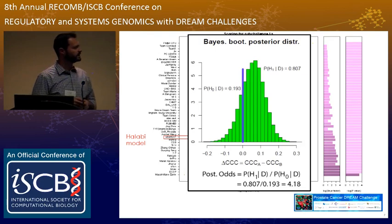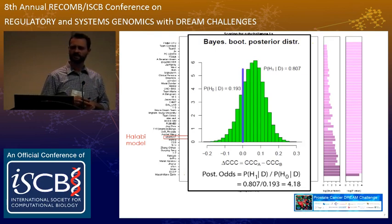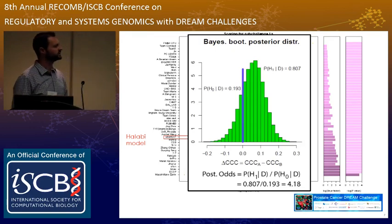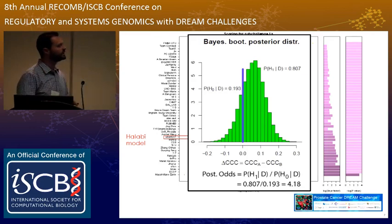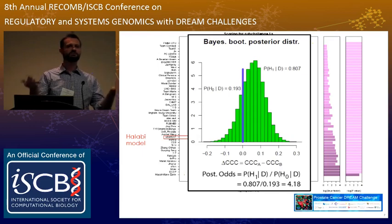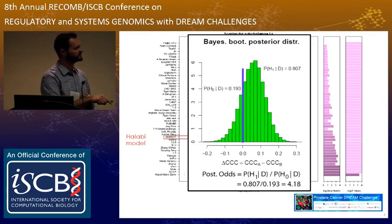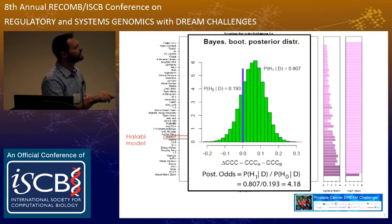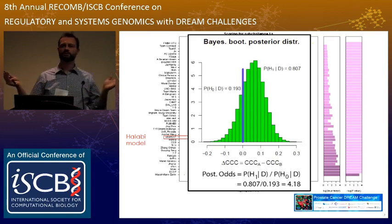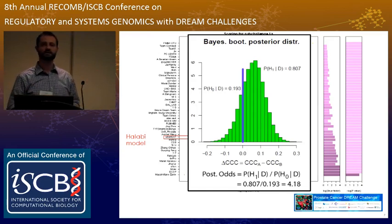When doing bootstrapping to determine if one team is actually better than another, we bootstrap the data, score teams, and compare the scores — giving a distribution of score differences. We can calculate the probability of model 1 winning versus model 0, given the data. In this instance, model 1 outperforms model 0 in 80% of cases, giving a Bayes factor of 4. We required a Bayes factor of 3 for any team to be considered a winner of the challenge.